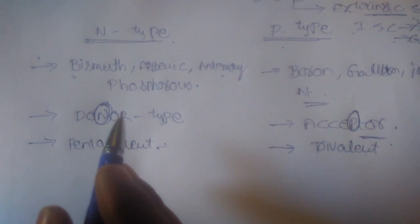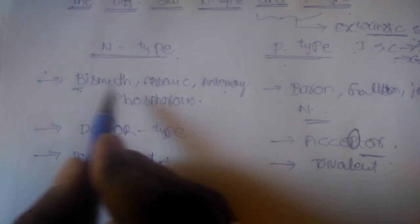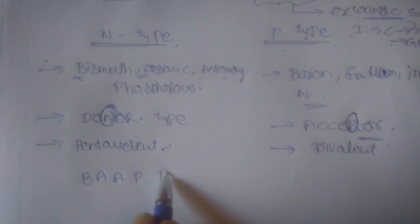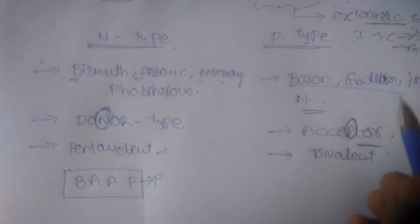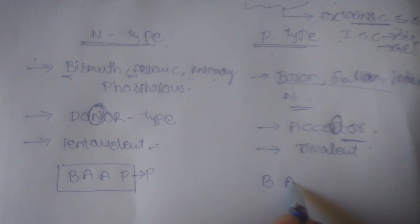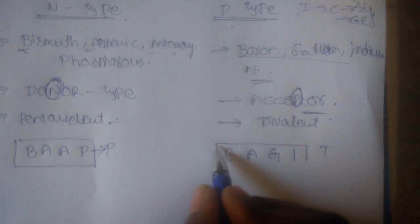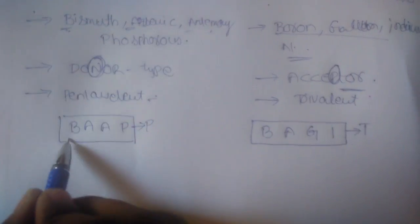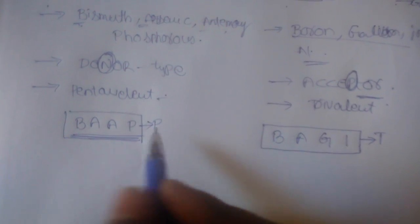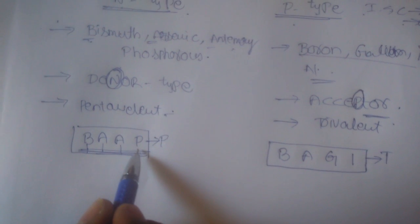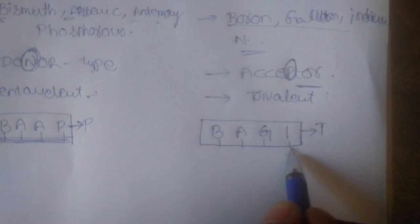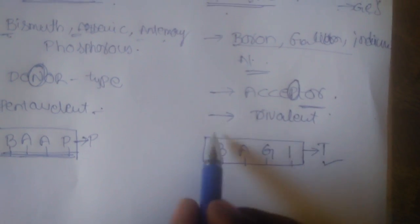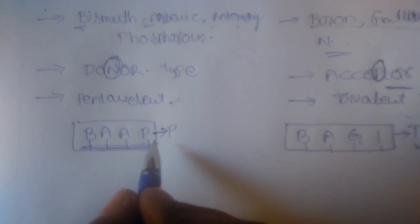The trick is to take the first letters of the n-type elements — bismuth, arsenic, antimony, phosphorus — giving the mnemonic BAP. BAP is used for remembering pentavalent impurities. For trivalent impurities, we use the mnemonic BAGIT — boron, aluminum, gallium, indium, and thallium — to remember the p-type elements.